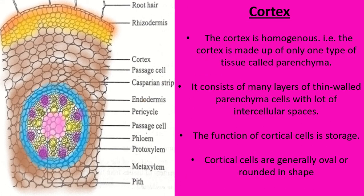The next section is cortex. Cortex is a homogeneous portion, meaning it is made up of only one type of cell or tissue — that is parenchyma. Parenchyma cells are living cells, and the cortex contains many layers of thin-walled parenchyma cells with lots of intracellular space. The cortical cells may be oval or round in shape, and their function is storage.